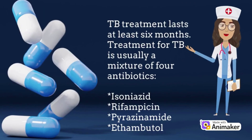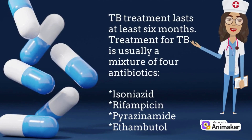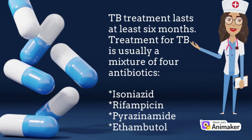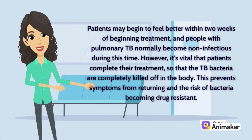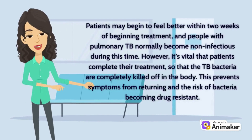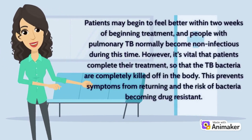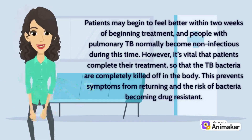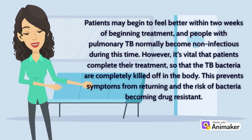TB treatment lasts at least six months and usually involves a mixture of four antibiotics: isoniazid, rifampicin, pyrazinamide, and ethambutol. Patients may begin to feel better within two weeks of beginning their treatment, and people with pulmonary TB normally become non-infectious during this time.